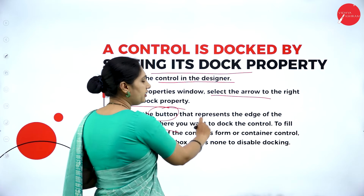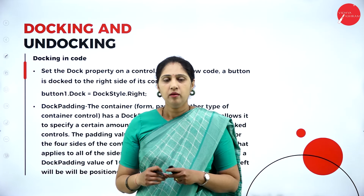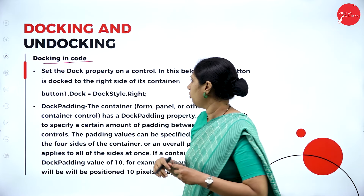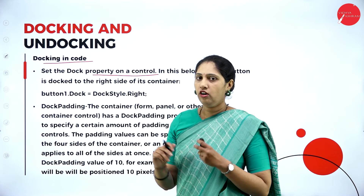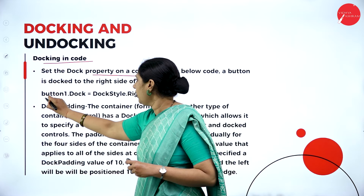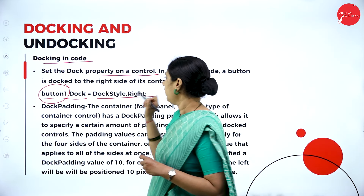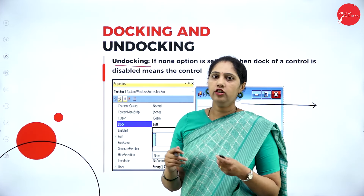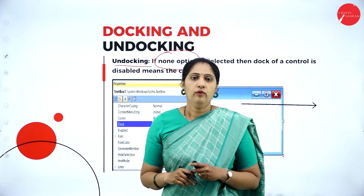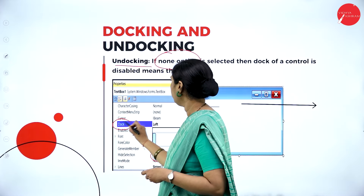You can change the dock property. The dock property of the control class allows you to get or set the borders docked to the parent control. To set docking mode, use the Visual Studio design properties window on the right side. To dock a control in designer: select the control in the designer, find the arrow to the right of the docking property in the properties window, then select the button representing the edge of the container.